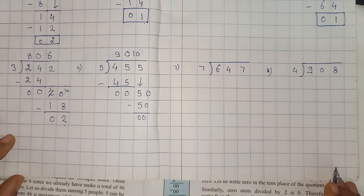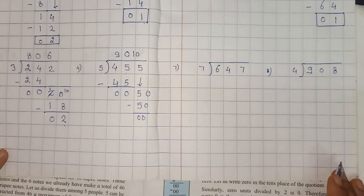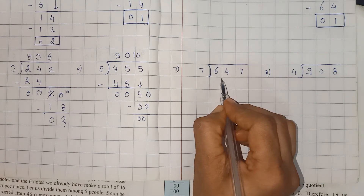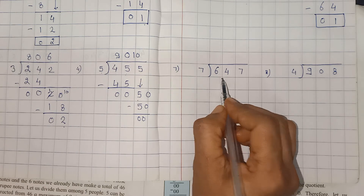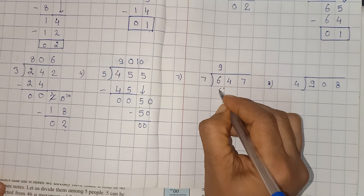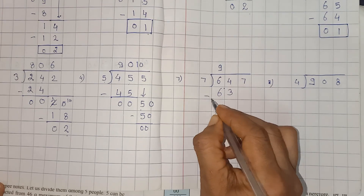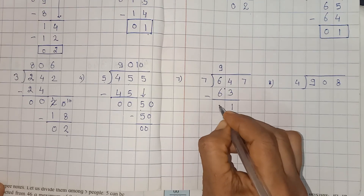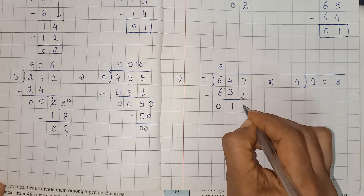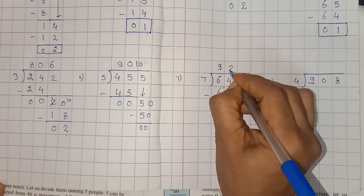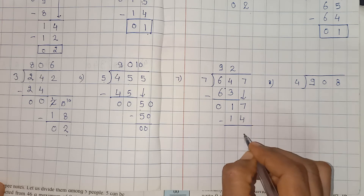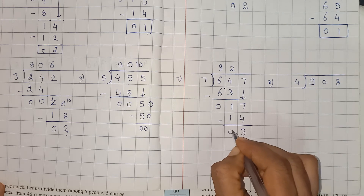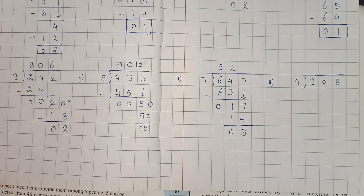Now next question is 647 divided by 7. Let's start the solution. So 64 — yahan pe hum 7 nines karenge. 7 nines are 63. Minus 63 kar diya, bachcho. 4 minus 3 is 1, 6 minus 6 is 0. 7 ko hum neeche le lete hain. 7 twos are 14, minus 14. 7 minus 4 is 3 and 1 minus 1 is 0. So answer is 92 and remainder is 3.